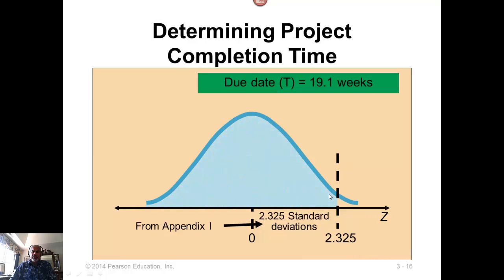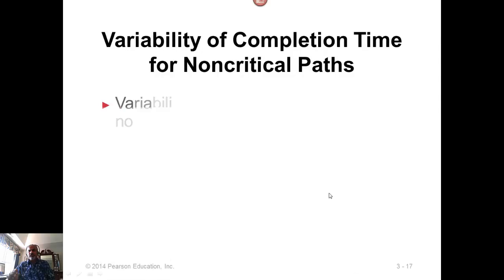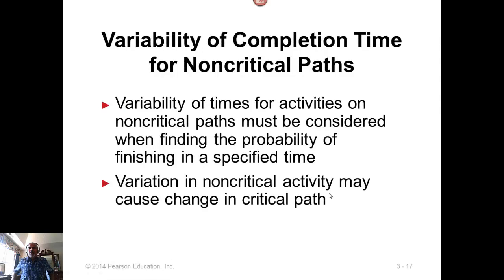One more thing we should keep in mind, that if the second longest path, which is not a critical path, but if the second longest path has a higher variance than the critical path, then the probabilities of the second longest path will be very important. You have to compute probabilities for the second longest path also. You do that only if the second longest path has a larger variance or larger standard deviation than the critical path.